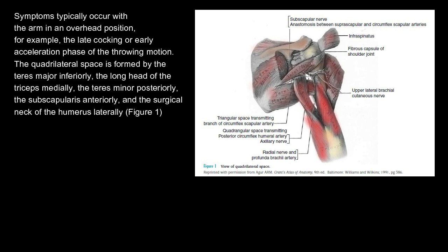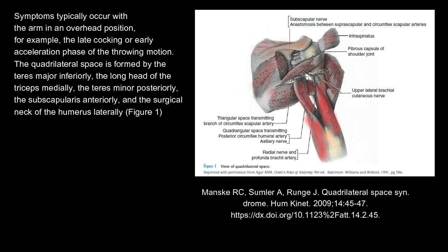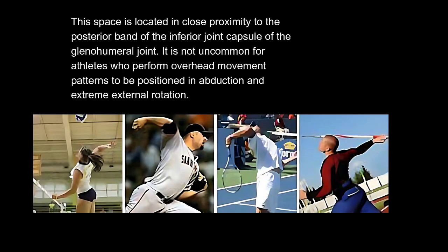Symptoms occur during, for example, the late cocking or early acceleration phase of the throwing motion. The quadrilateral space is formed by the teres major inferiorly, the long head of the triceps medially, the teres minor posteriorly, the subscapularis anteriorly, and the surgical neck of the humerus laterally. This space is located in close proximity to the posterior band of the inferior joint capsule of the glenohumeral joint.